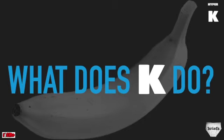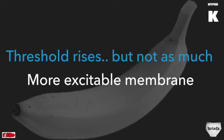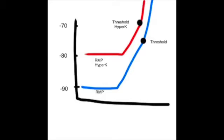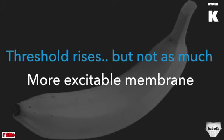Hyperkalemia also affects the threshold potential, but it doesn't change it by as much as it does the resting membrane potential. So if the RMP is now minus 80, the threshold potential might go from minus 75 to minus 70 millivolts — only a 10 millivolt difference instead of the normal 15. This means the cardiac membrane is more excitable in early hyperkalemia. However, as hyperkalemia gets more severe, the effect of decreasing Vmax and slowing depolarization overwhelms this increase in excitability.